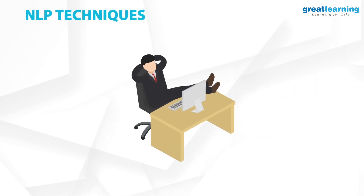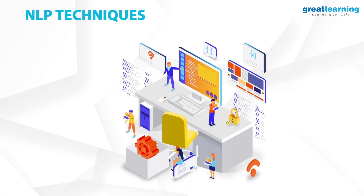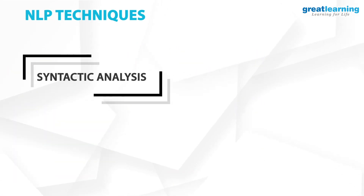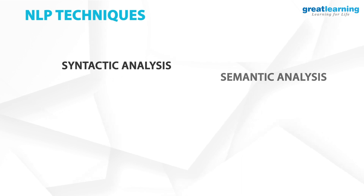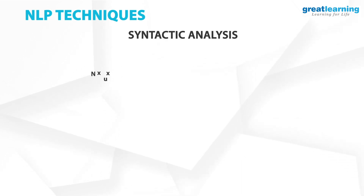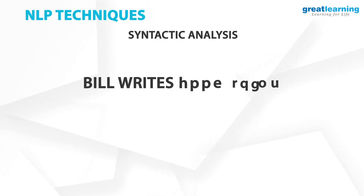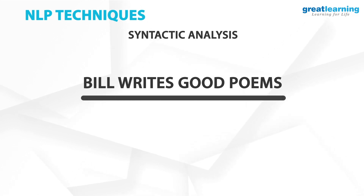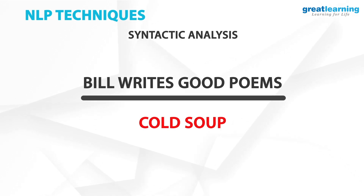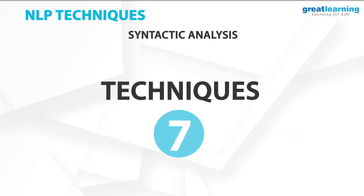Now, since you have a brief idea about what natural language processing means and where it is being used, we can look at the different techniques involved. Syntactic analysis and semantic analysis are the two main categories under NLP. Syntactic analysis, or syntax, refers to the arrangement of words in a sentence in a particular order so that they make grammatical sense. Syntactic analysis is used to assess how natural language aligns with grammatical rules, with the aim to derive meaning from a group of words. There are seven techniques under syntactic analysis.